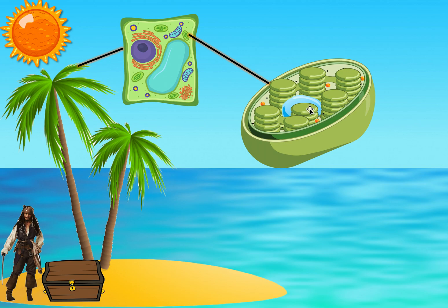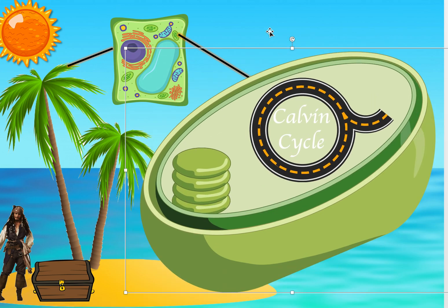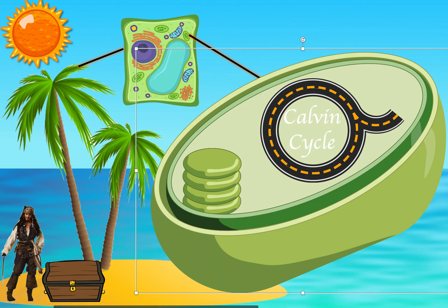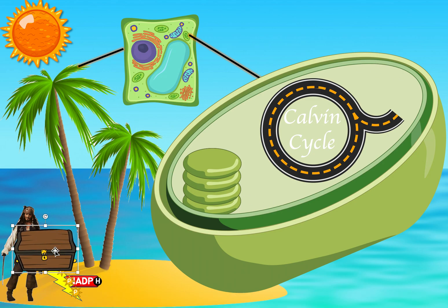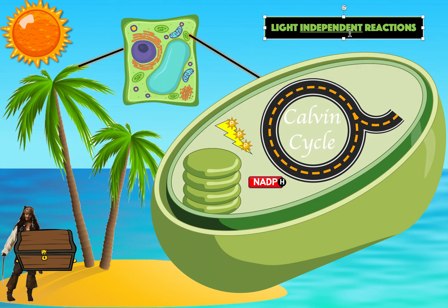Here we have the chloroplast, but it's crowded, so I'm going to take a simplified version and make it bigger to focus on. Remember, we created ATP and NADPH right outside of the thylakoid — in the stroma. These two molecules are going to be used in the light-independent reaction, which is the second reaction. Another name for the light-independent reaction is the Calvin cycle.